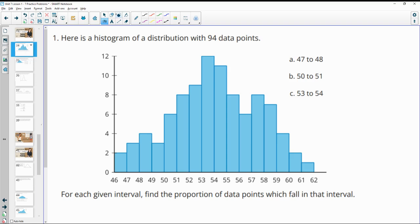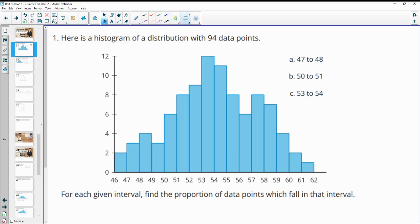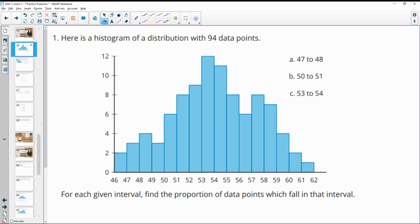Number one gives us a histogram with 94 data points and wants us to figure out what proportion of the data is in each interval. When you look at a histogram, they give you an interval and this vertical axis tells you how many data points there are in that interval.